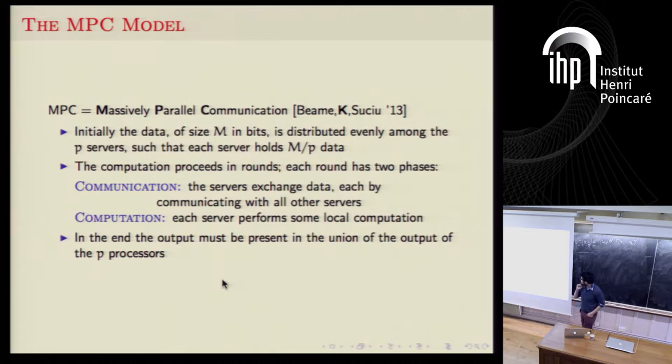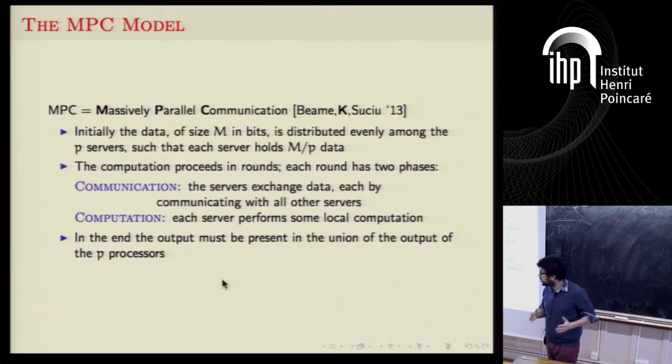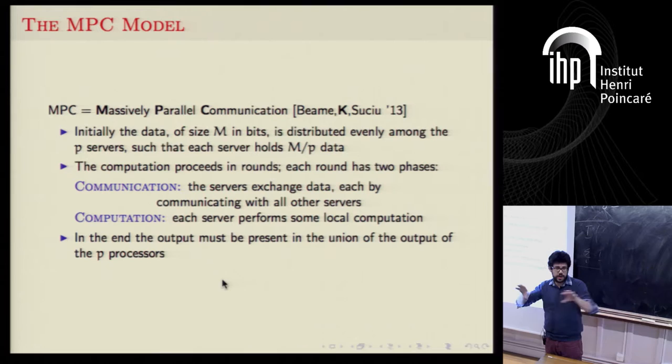The thing I forgot to say was that in the end, we want the output to be present in the union of the outputs of all processors. This is a big difference from communication complexity models where problems are usually decision problems — you get a yes or no answer. Here, because we're dealing with queries, queries can have a very large output, possibly much bigger than the input. So each processor produces some output and the final output is the union.